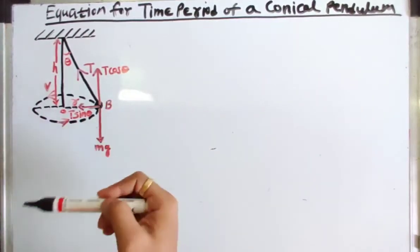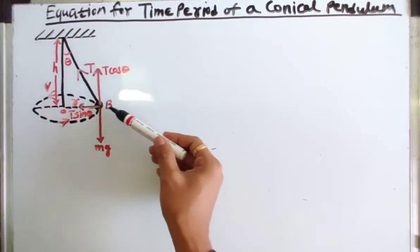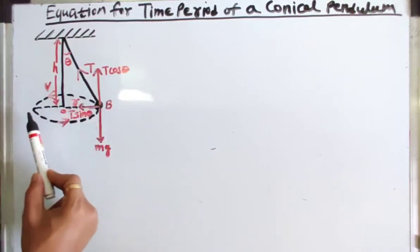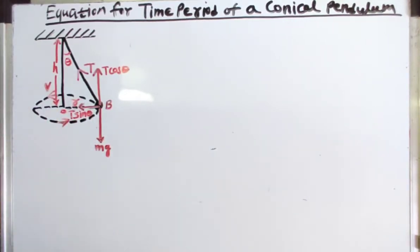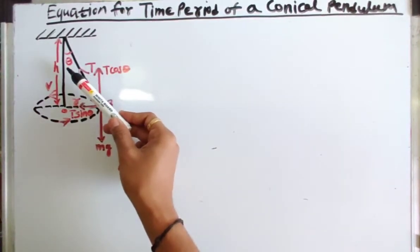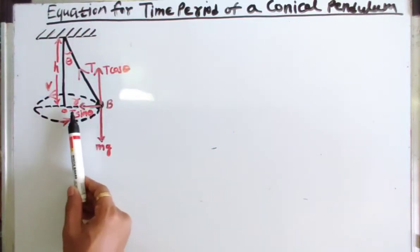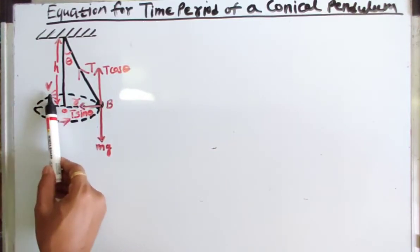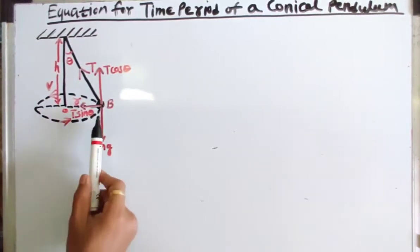As we can see in this diagram, we have a bob P of mass m attached to a string revolving along a horizontal circle in an anticlockwise sense of radius r with linear speed v. Let theta be the semi-vertical angle of the cone, L the length of the pendulum, r the radius of the horizontal circle, v the linear speed of the bob, and h the axial height of the cone.